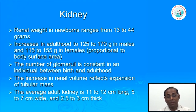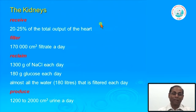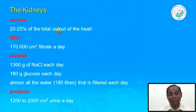Remembering these dimensions is extremely important because in any chronic renal disease, kidney volume shrinks. That is why in ultrasound, one of the major issues physicians look for is the size of the kidney—whether it is normal or shrunken. The kidney receives almost 20 to 25 percent of the total output of the heart because it has to perform excretion or filtration of blood, and it filters almost 170,000 cc of filtrate every day.